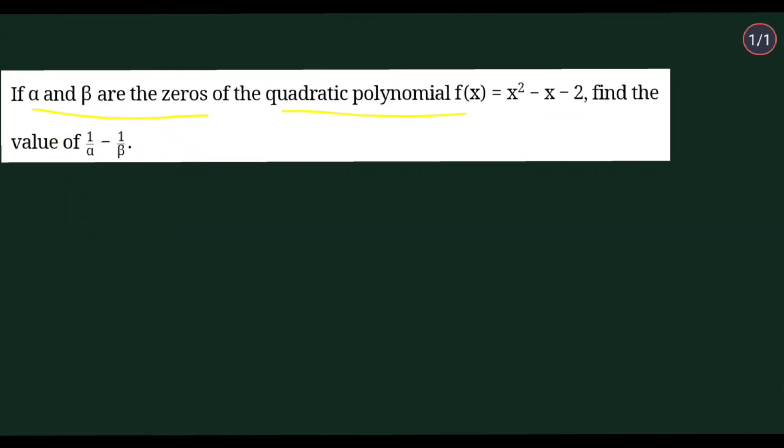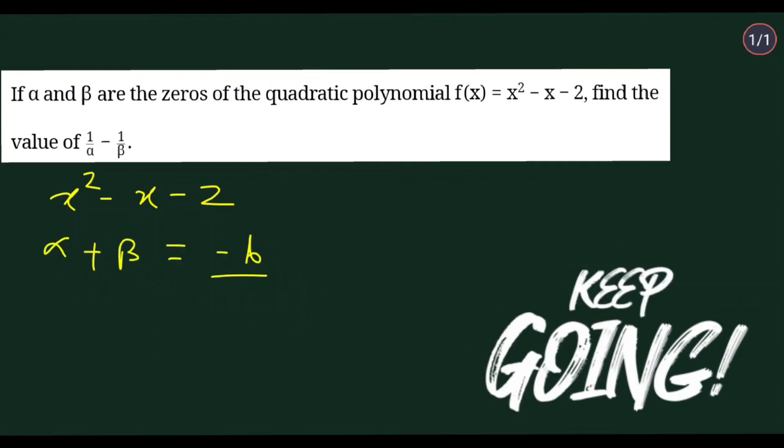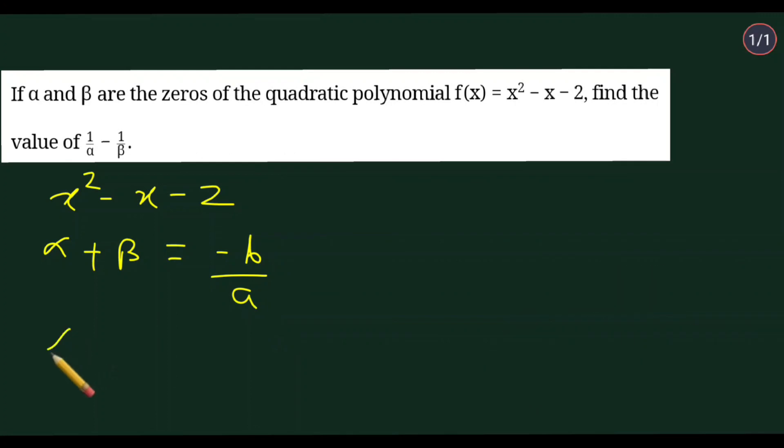You have a quadratic polynomial given, that is x square minus x minus 2, and you have to find the value of 1 by alpha minus 1 by beta. You know two relations about the zeros and coefficients of polynomial: sum of zeros is equal to alpha plus beta equals minus b by a, and alpha multiplied by beta equals c by a.